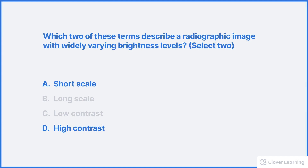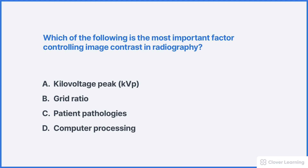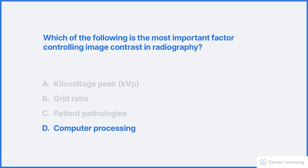Here's another practice question: which of the following is the most important factor controlling image contrast in radiography? The correct answer is D — computer processing. The other factors do have an influence on image contrast, but in digital imaging these factors are less significant than they are in conventional film imaging. Modern computer processing is very effective at analyzing the radiographic image and creating just the right amount of image contrast.